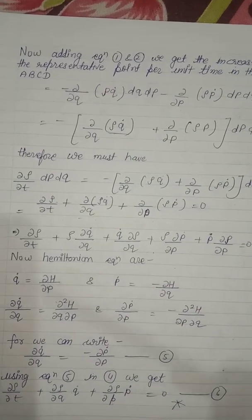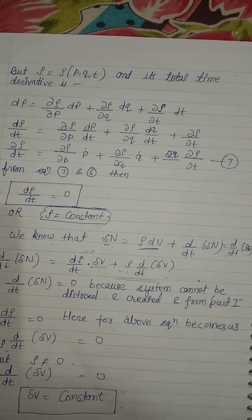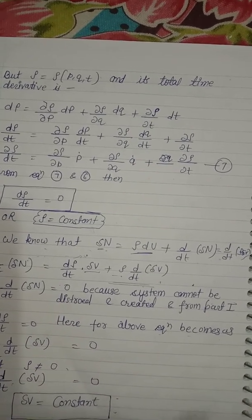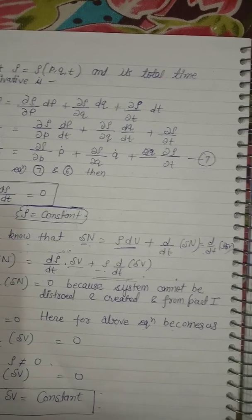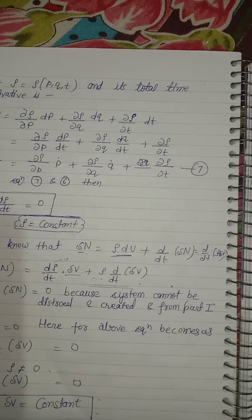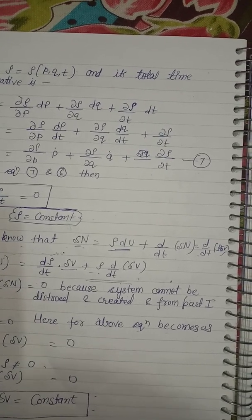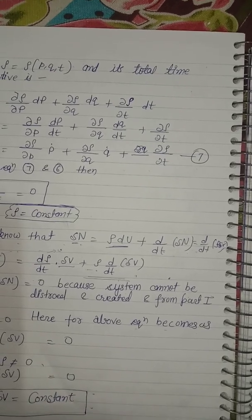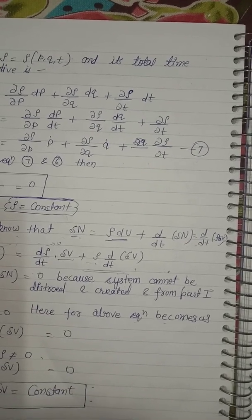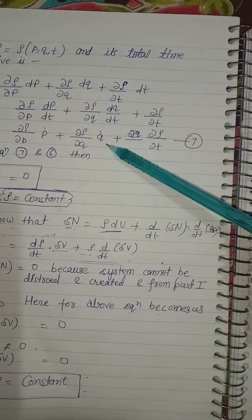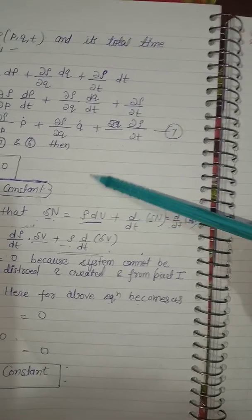We know that ρ = ρ(P, Q, t), since ρ depends on P, Q, and time t. Its total time derivative is: dρ/dt = (∂ρ/∂P)Ṗ + (∂ρ/∂Q)Q̇ + ∂ρ/∂t. This is equation seven. Combining equations seven and six, we get dρ/dt = 0, meaning ρ is constant.